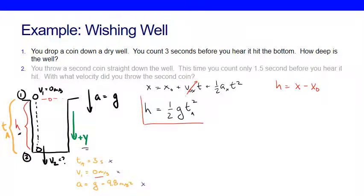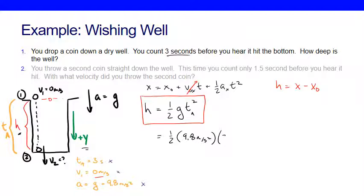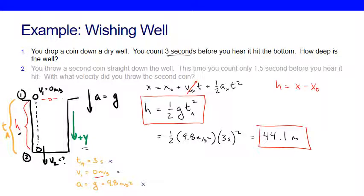If I plug in my values: one-half times 9.8 meters per second squared times (3 seconds)² — when I calculate that out, I get 44.1 meters as the height of the well. So this well is 44.1 meters deep.